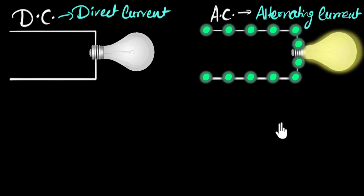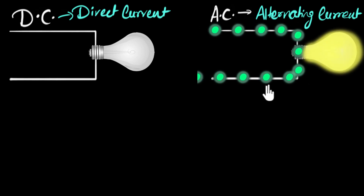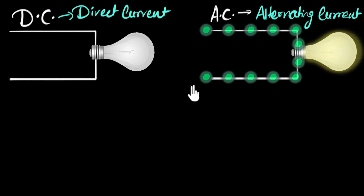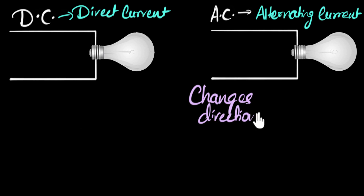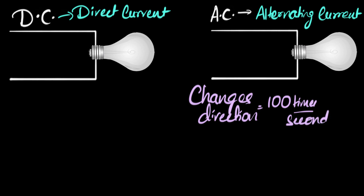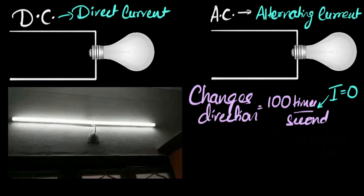And why does it flicker 100 times a second? That's because in India, the current we get from our main supply changes its direction 100 times a second. The current changes direction about 100 times per second. That means the current goes to zero 100 times in one second, the filament cools down about 100 times a second, and we see the bulb dimming and coming back up about 100 times a second. Something very similar is happening with the tube light — it flickers because of the alternating current.